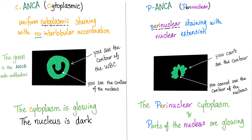P-ANCA, on the other hand, shows perinuclear staining — the perinuclear area is part of the cytoplasm — with nuclear extension and interlobular accentuation. You cannot see the distinct contour of the cell or the nucleus. You cannot tell if it's a neutrophil or monocyte, and that's the whole point, because it stains the perinuclear area and the nucleus together. Unlike C-ANCA, where everything was clearly demarcated, in P-ANCA everything is mixed together. That's how we differentiate between C-ANCA and P-ANCA under the immunofluorescent microscope.